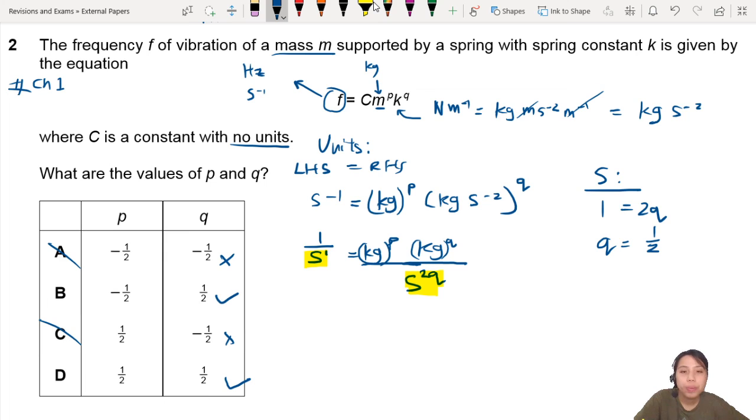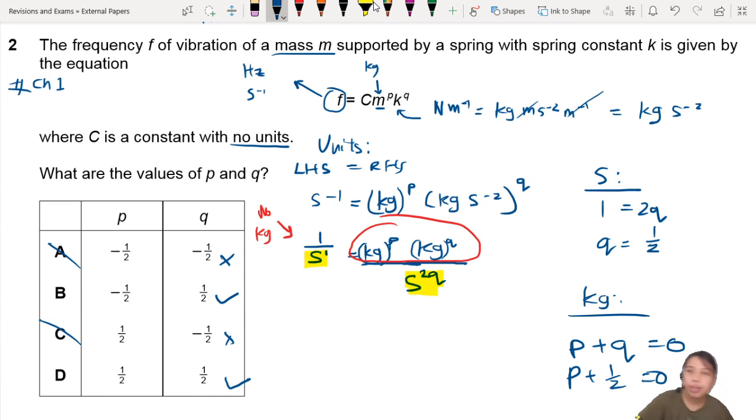Now what's left is kg. Notice there are no kg on the left-hand side. So that means the kg here must have cancelled each other out. What does that mean? That means for kg, p plus q, their power must equal to 0. And we already know q is half, so p plus half equals to 0. Then p equals to negative half.